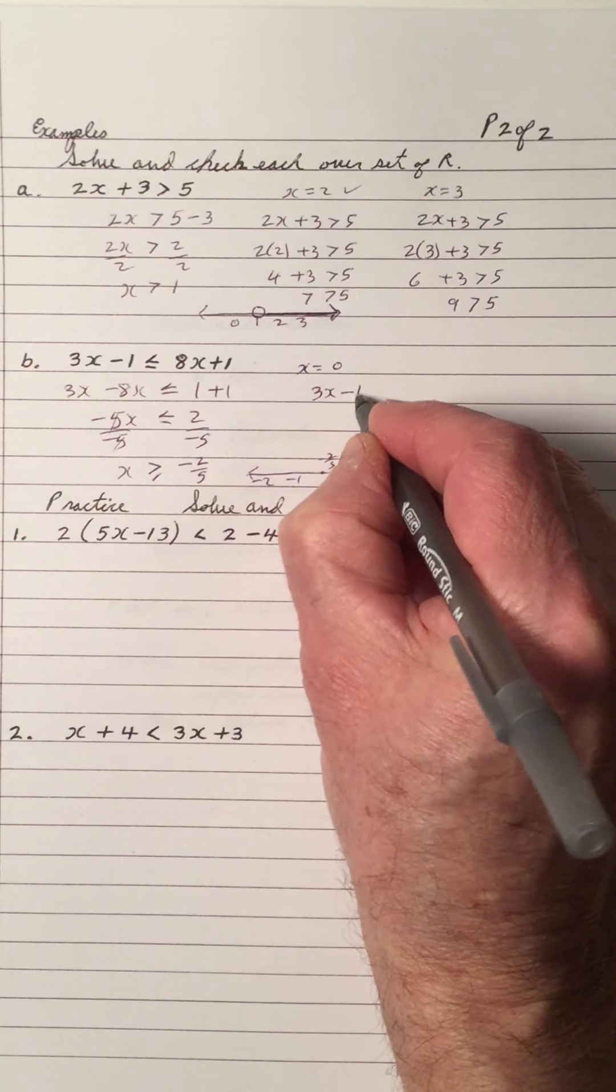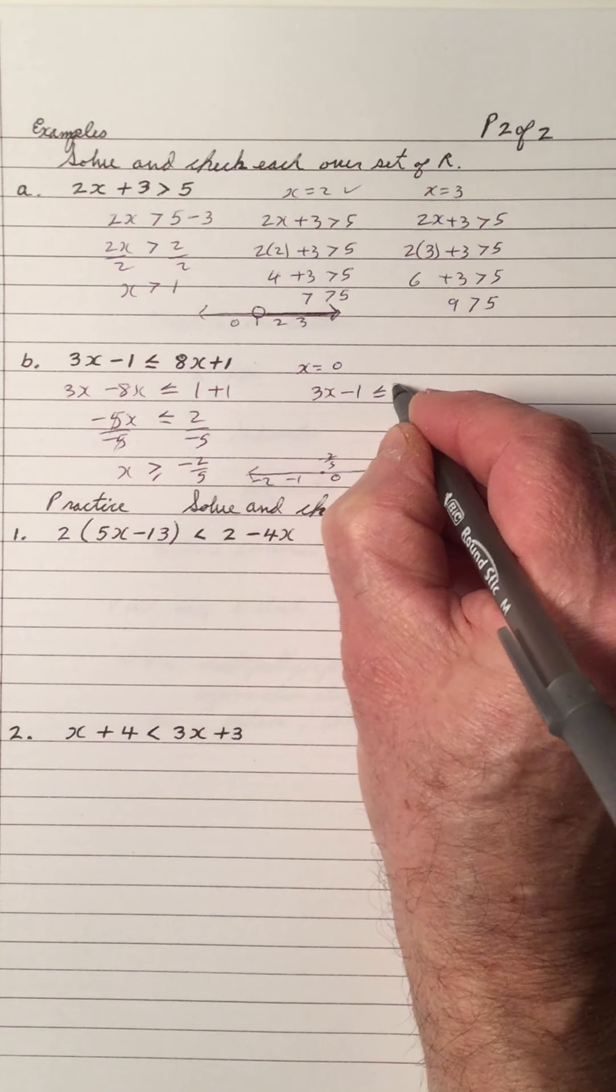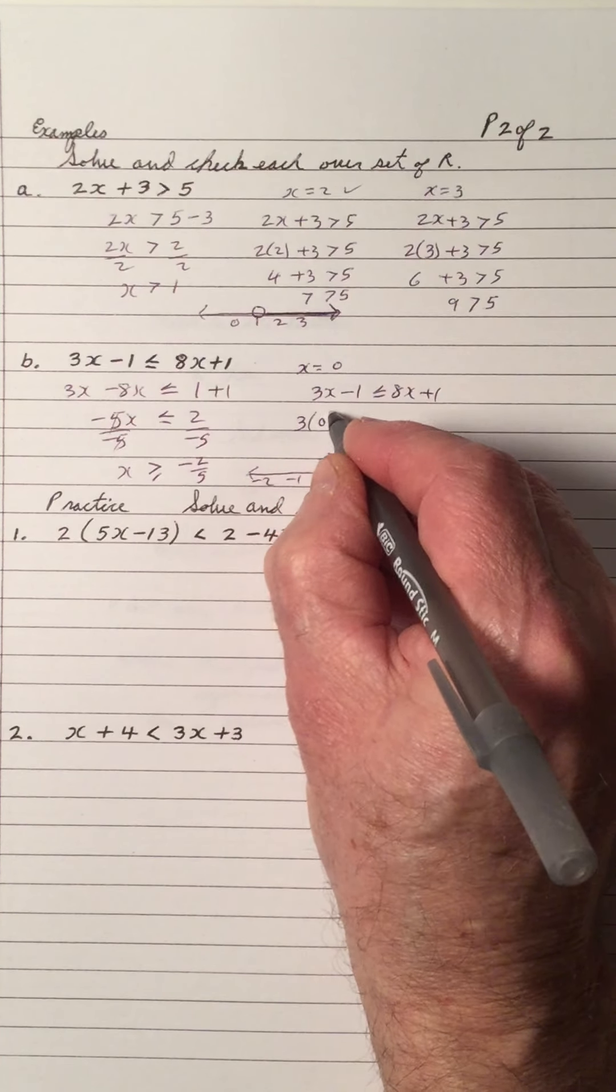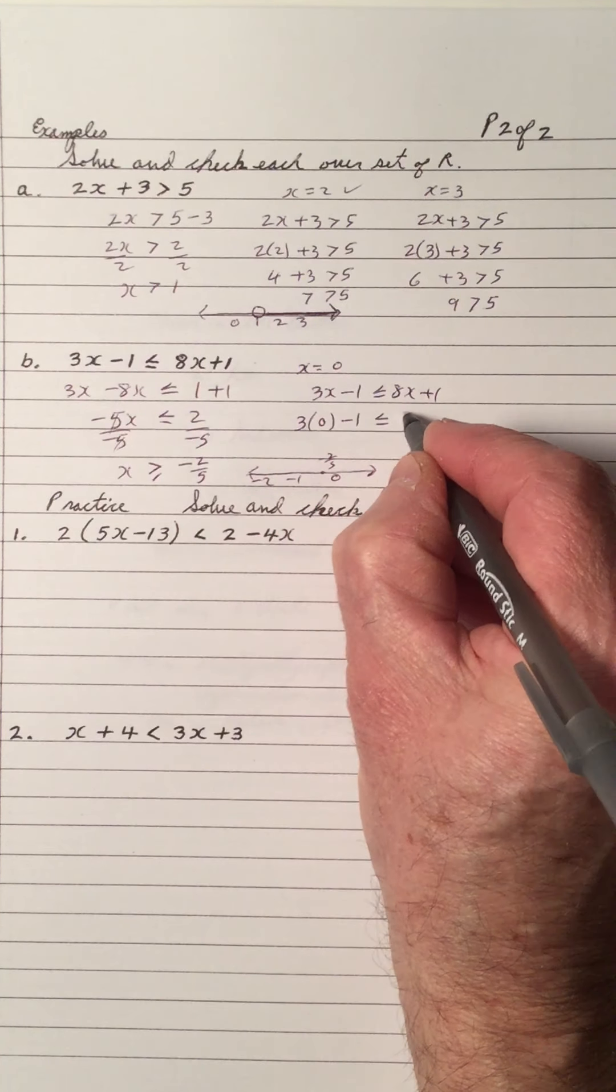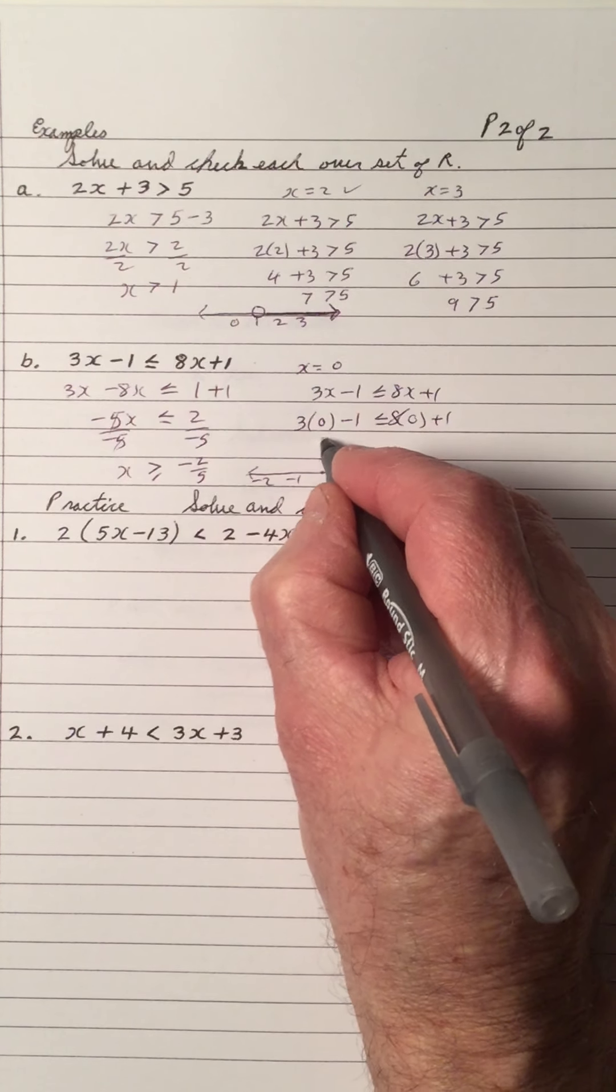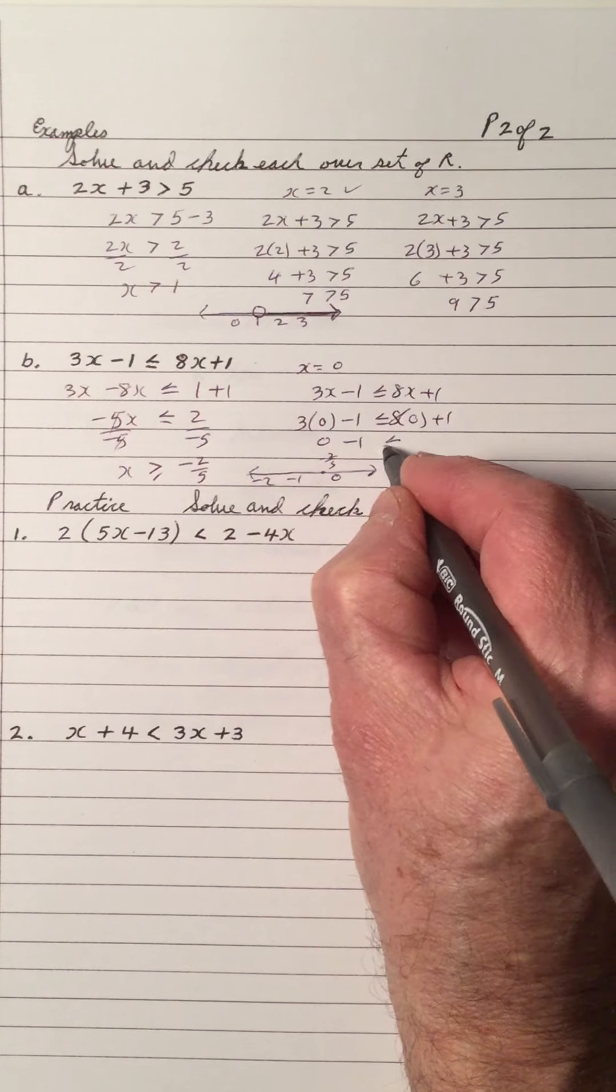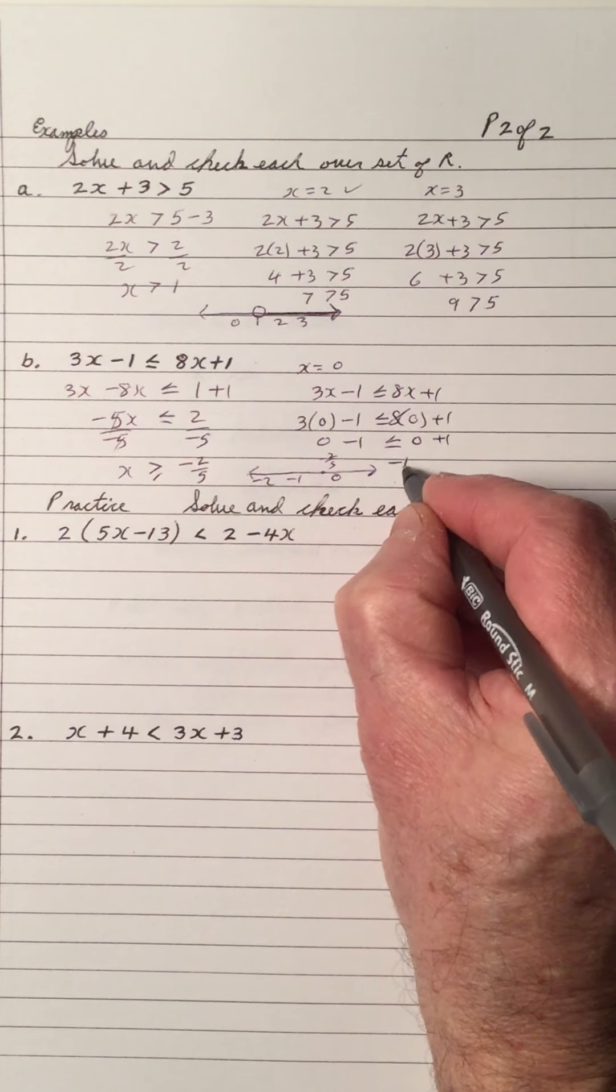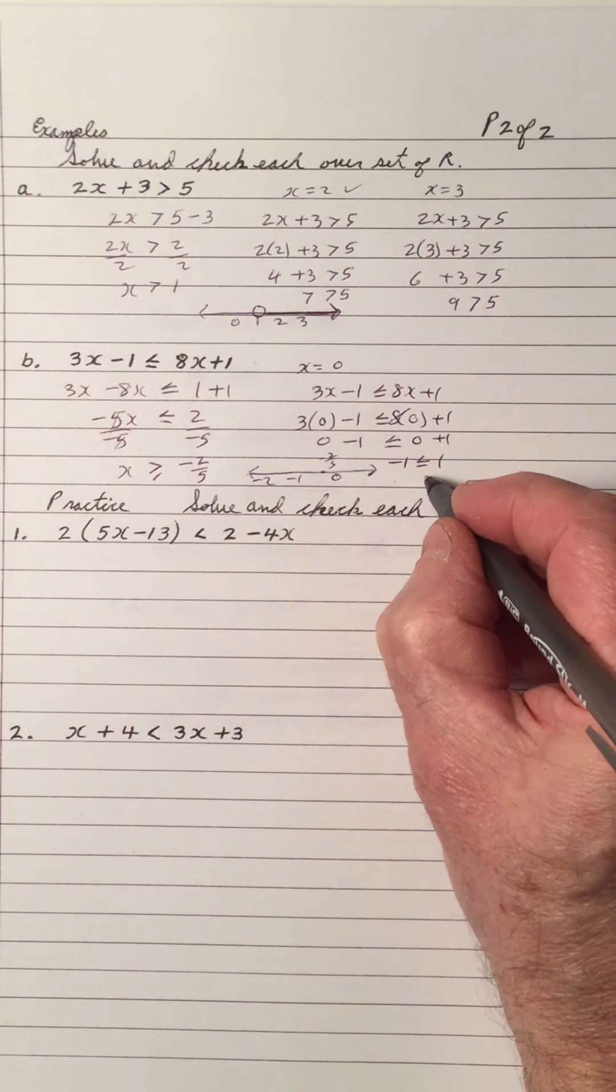So let's try 0. So 3x minus 1 less than 8x plus 1. We're subbing 0 in the place of x. And 0 is going in the place of x. So 0 minus 1 is less than or equal to 0 plus 1. Negative 1 is less than 1. And that's true.